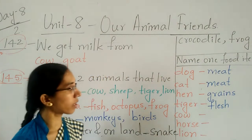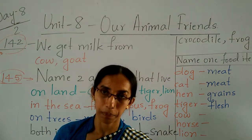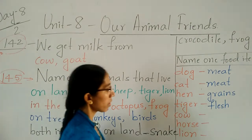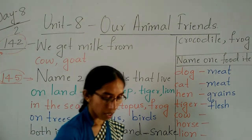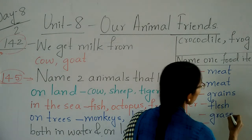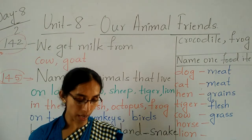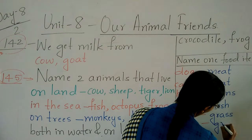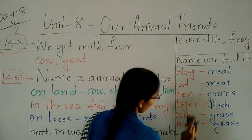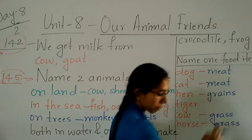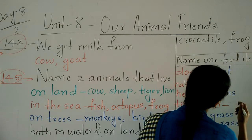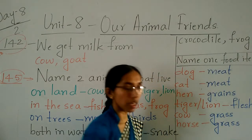Tiger and lion — they attack the animal and after killing it, they eat it. So tiger and lion eat the flesh of other animals. What does the cow eat? Cow eats grass and leaves. Horse also eats grass. Lion — tiger and lion both eat flesh — the flesh of other animals.